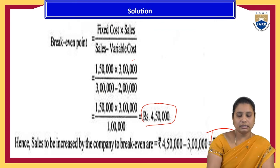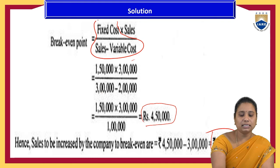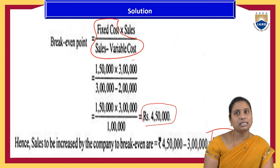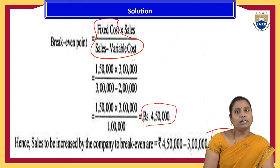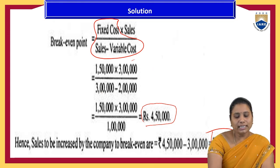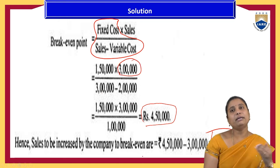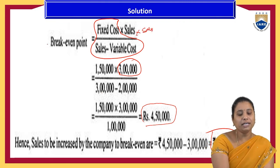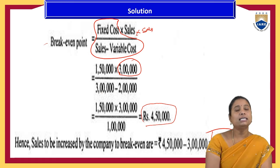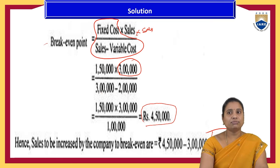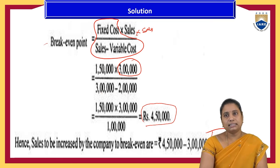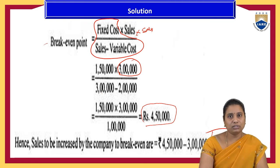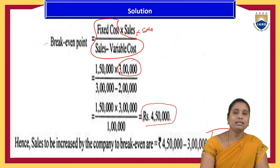So no new formula is required here. We already know that BEP in terms of units = fixed cost ÷ (sales − variable cost). The existing sales are ₹3 lakhs, and the expected break-even sales are ₹4,50,000, meaning sales must be increased by ₹1,50,000. This is another way to calculate the break-even point with the given data.